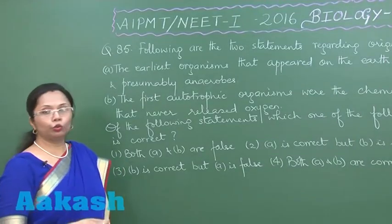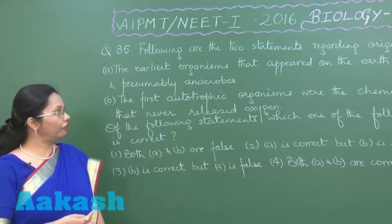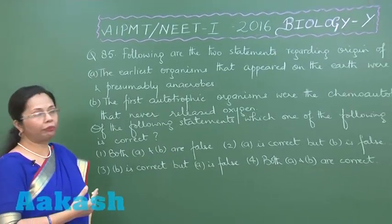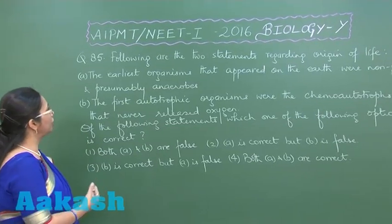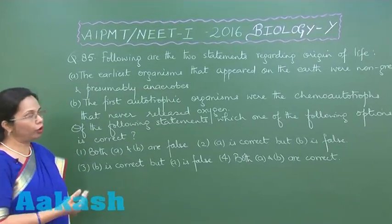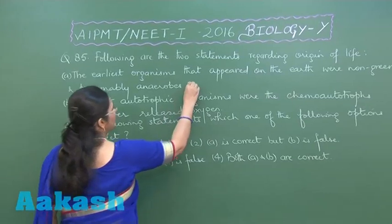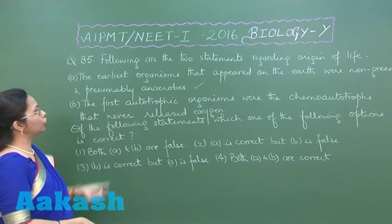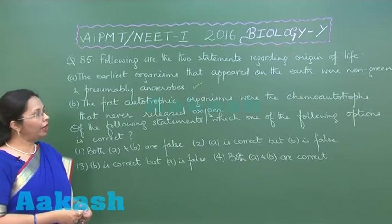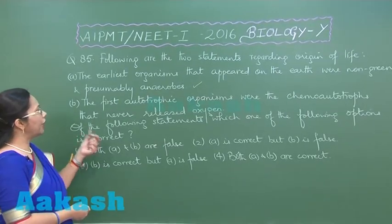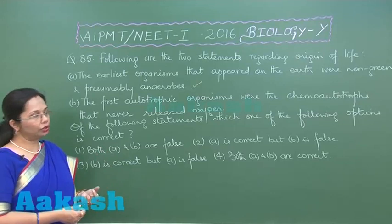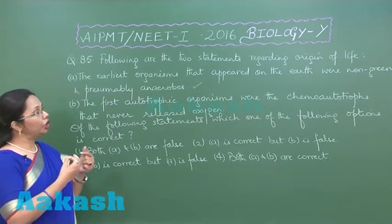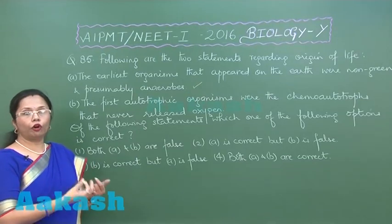In this question we have two statements regarding origin of life. The first statement — the earliest organisms that appeared on earth were non-green and presumably anaerobes — is absolutely correct. The second statement is that the first autotrophic organisms were chemo autotrophs that never released oxygen, and that is also correct, because it was first chemo autotrophism then followed by photo autotrophism.